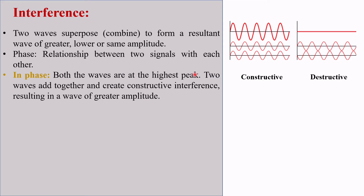When both the waves are at the highest peak, they are called in phase. Here, two waves act together and create constructive interference, resulting in a wave of greater amplitude. Here we can see this wave is at its highest peak, and this wave is also at its highest peak. If we add them together, the resulting wave will have a much bigger amplitude.